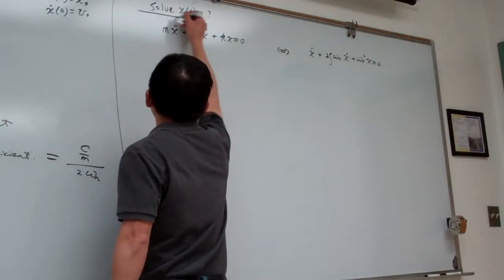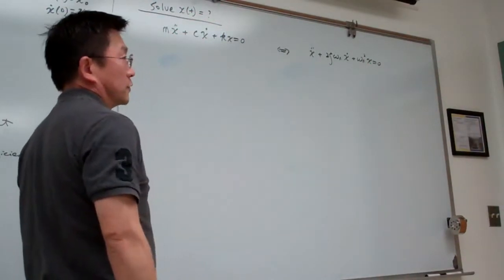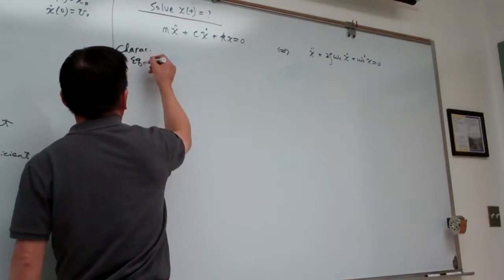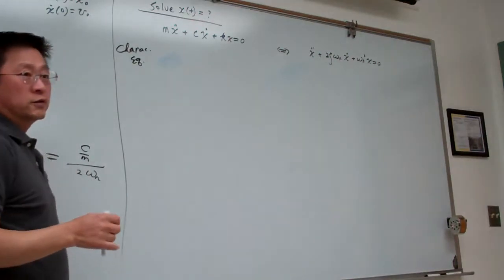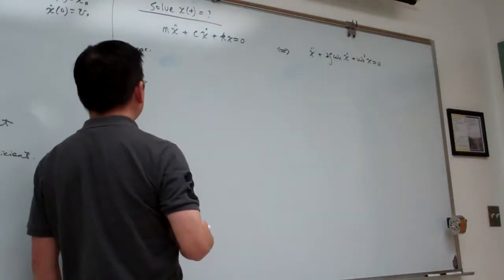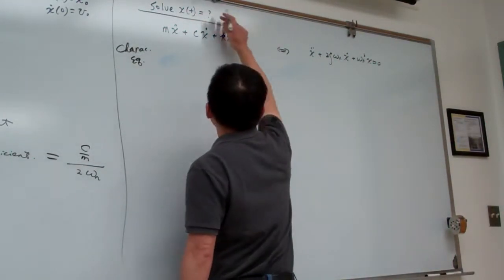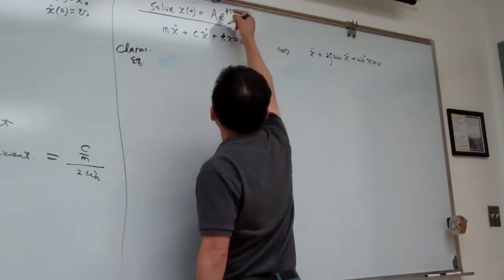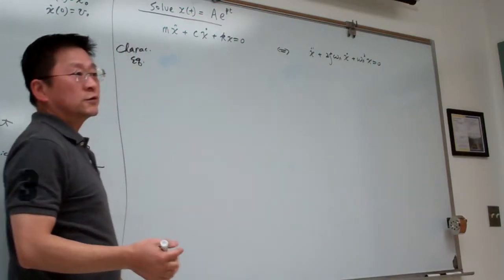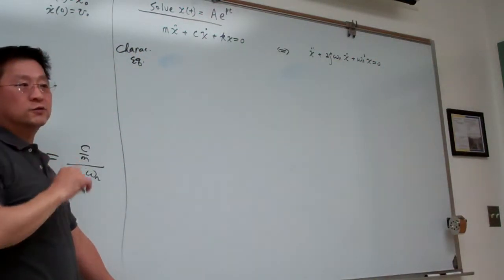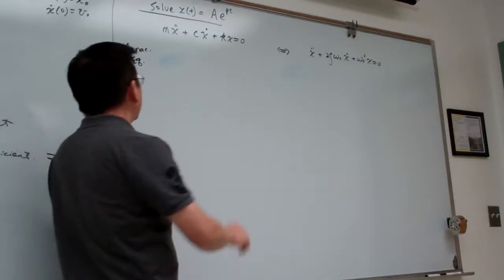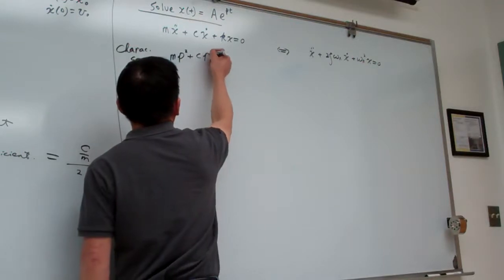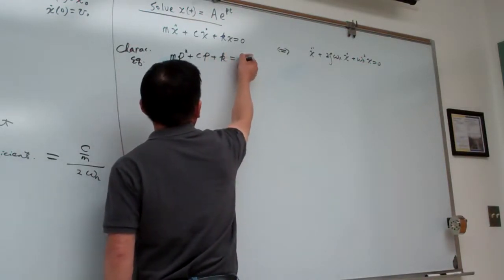Now we go through the solution process. The first step from solving differential equations: formulate the characteristic equation. We assume a solution of the form x = A·e^(pt), where p is a parameter. The characteristic equation is: m·p² + c·p + k = 0.